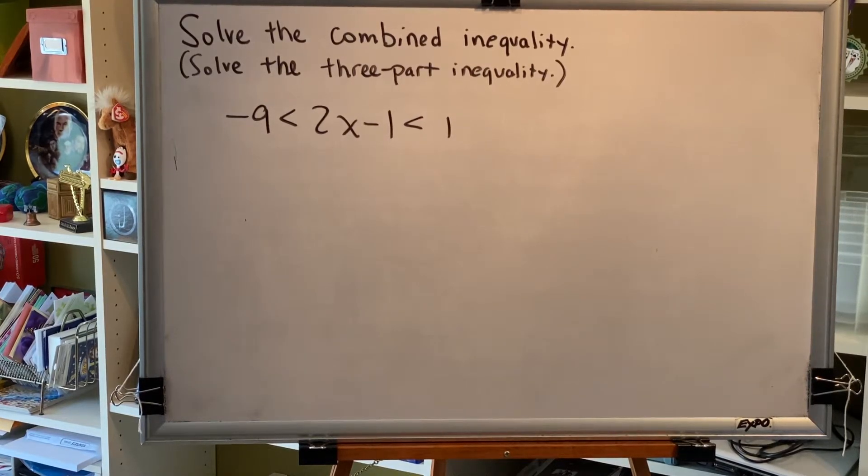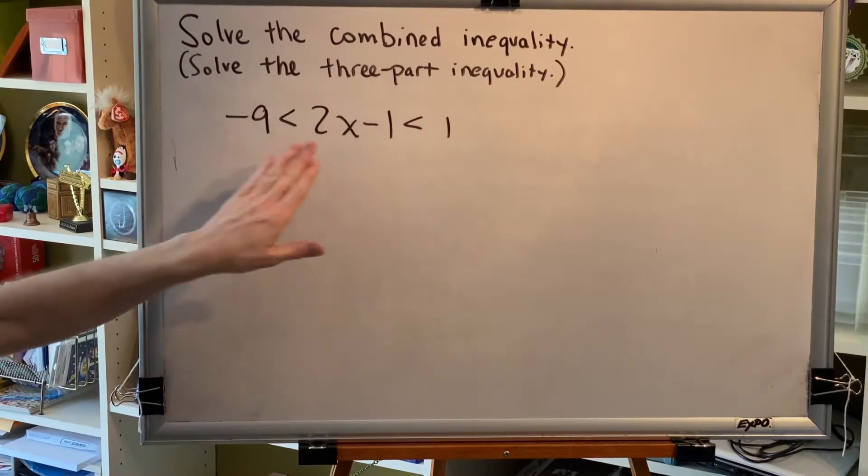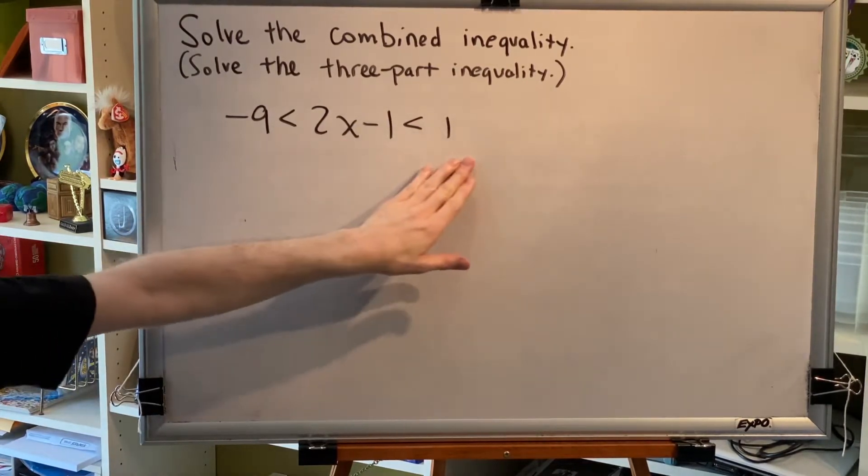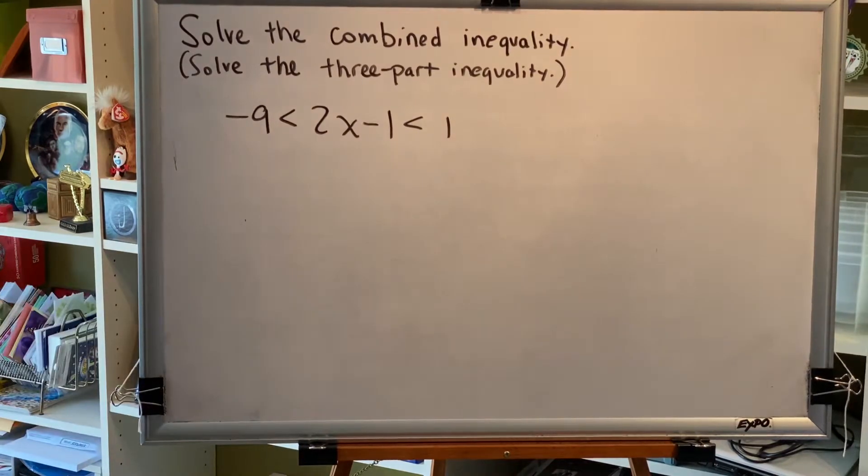The topic of this video is solving combined inequalities, sometimes referred to as three-part inequalities. Combined inequalities have three zones: a left, a middle, and a right. Whatever you do to one zone, you must do the same to the other two as well.